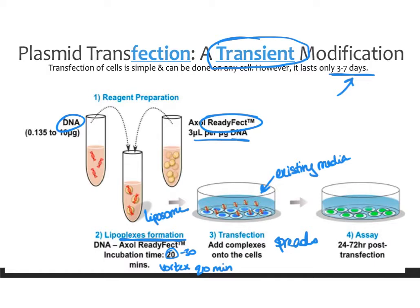Then wait about 48 to 72 hours post-transfection, and you should see transformation of your cells. If your cells have a fluorescent reporter, you can look under the microscope to check. If they don't, you'll need to do some sort of assay to make sure the modification actually happened.